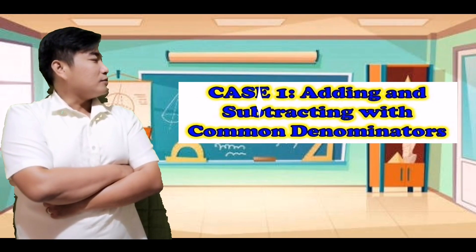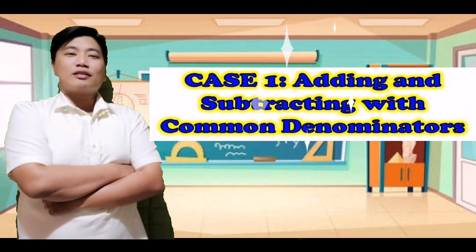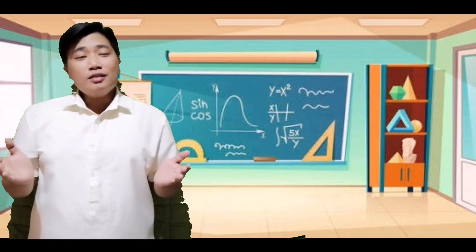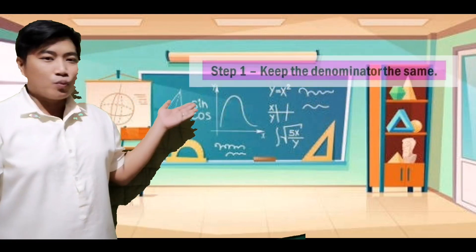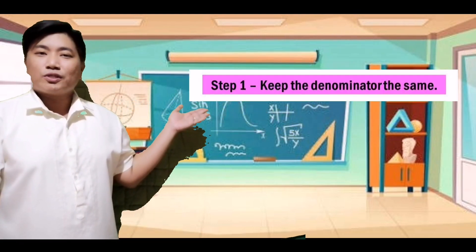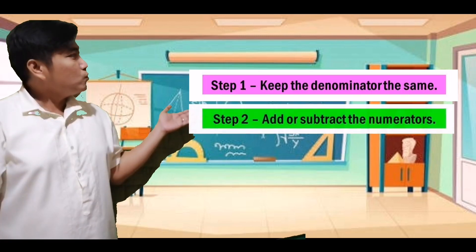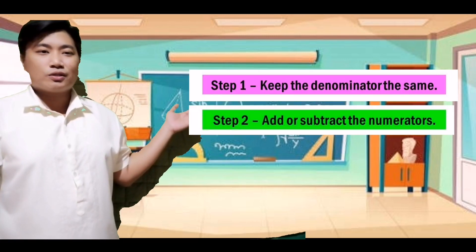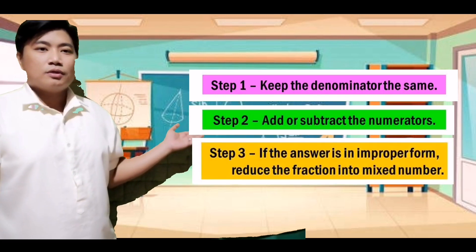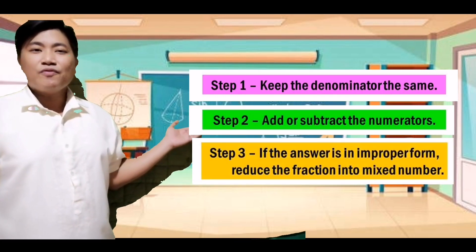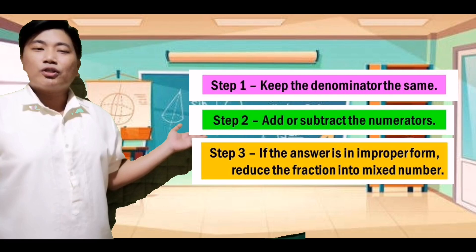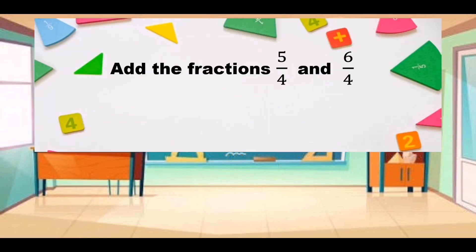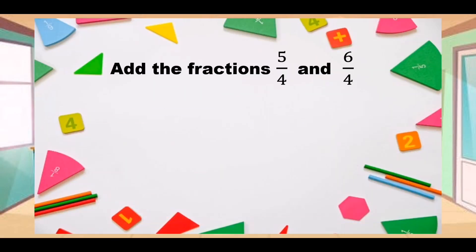Case number 1: Adding and subtracting with common denominators. Here are the 3 simple steps. Step number 1: Keep the denominators the same. Step number 2: Add or subtract the numerators. Step number 3: If the answer is an improper fraction, reduce the fraction into a mixed number. Let us have exercise number 1 as an example.